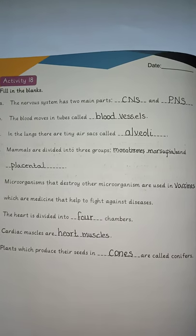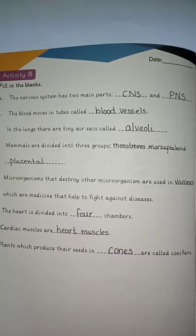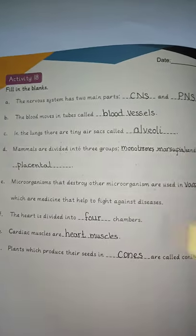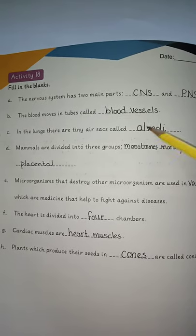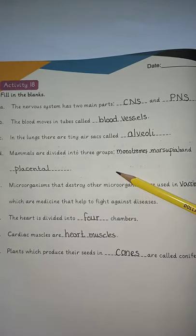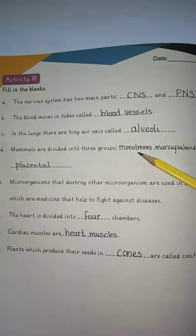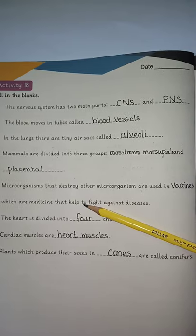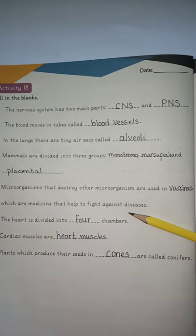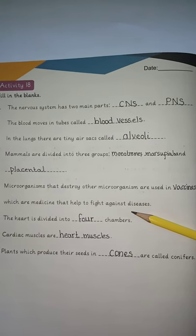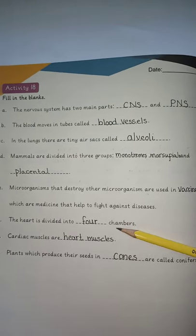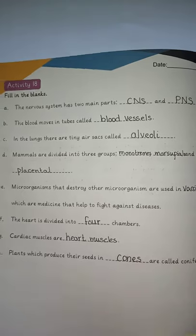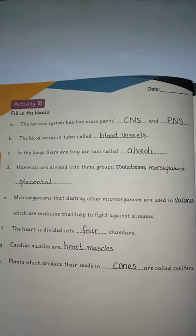Activity number 18 is fill in the blanks. The nervous system has two main parts: CNS (central nervous system) and PNS (peripheral nervous system). Blood moves in tubes called blood vessels. In the lungs there are tiny air sacs called alveoli. Mammals are divided into three groups: monotremes, marsupials, and placentals. Microorganisms that destroy other microorganisms are used in vaccines. The heart has four chambers; cardiac muscles are the heart muscles. Plants which produce their seeds in cones are called conifers.